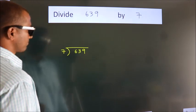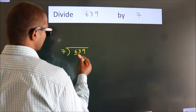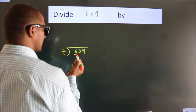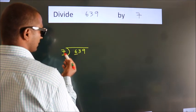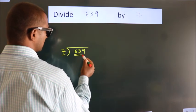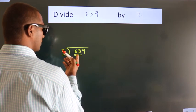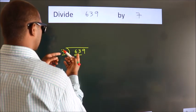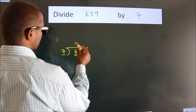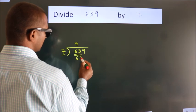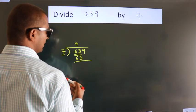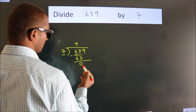Next. Here we have 6, here 7. 6 smaller than 7. So we should take 2 numbers, 63. When do we get 63? In 7 table. 7 nines, 63. Now we should subtract. We get 0.